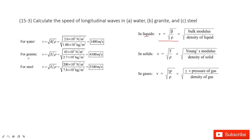For the second material, granite, which is a solid, we use the solid equation. We find Young's modulus and the density for granite and input them into the equation. Similarly, for steel, also a solid, we find Young's modulus and the density for steel, input them into the equation, and get the final answer.